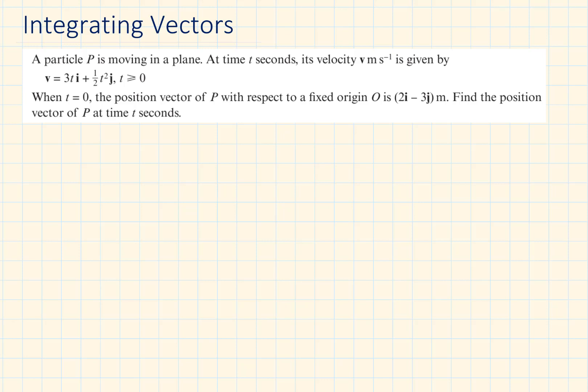A particle P is moving in a plane. At time t seconds, its velocity is given. When t is equal to 0, the position vector of P with respect to a fixed origin is 2i minus 3j. Find the position vector of P at time t seconds.